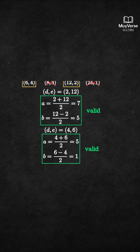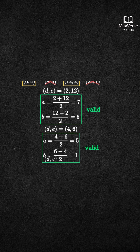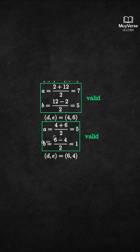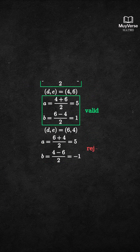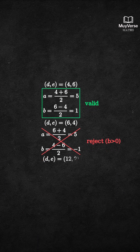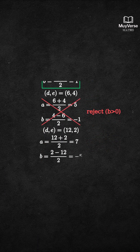Step 5: collect the positive integer solutions. The valid ordered pairs are a equals 7, b equals 5, or a equals 5, b equals 1. Quick check: 7 squared minus 5 squared equals 49 minus 25 equals 24, and 5 squared minus 1 squared equals 25 minus 1 equals 24.